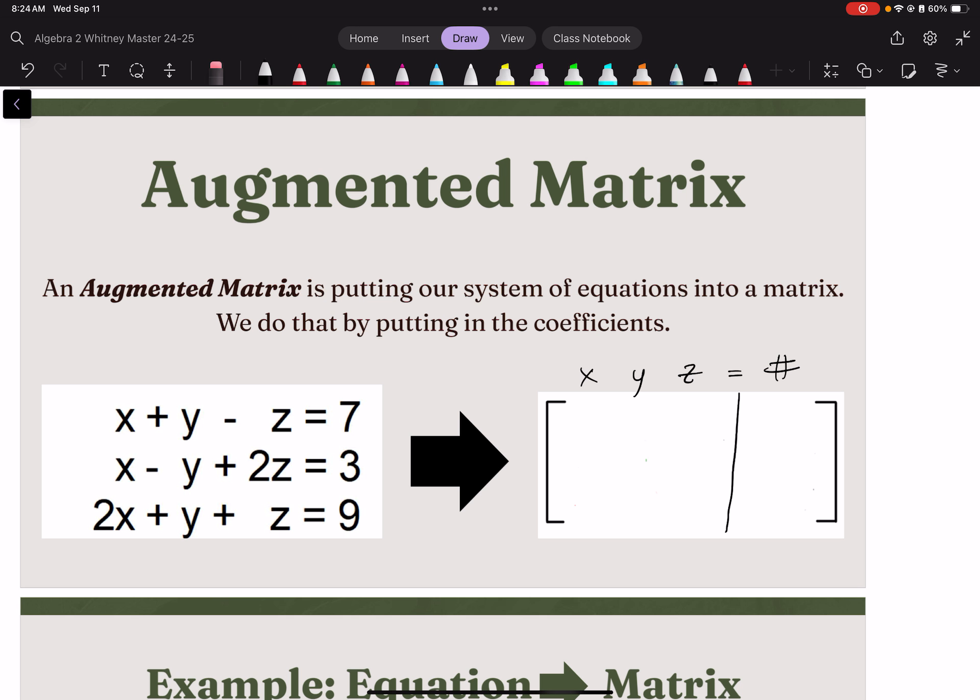So, our first row, we have 1x, we have 1y, we have negative 1z, and it equals 7. So, we put that. Second row, 1, negative 1, 2, 3. Last one, 2, 1, 1, 9.